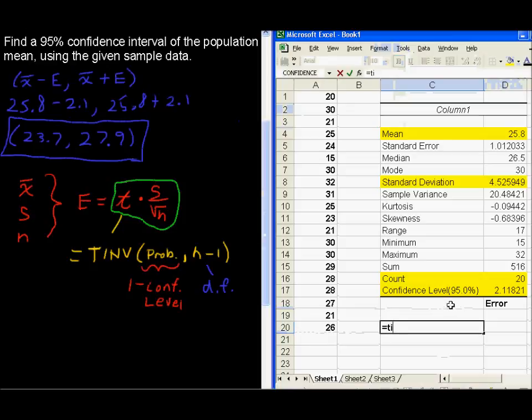Equals TINV. This is going to give us our t value. Probability is 1 minus that confidence level. Comma. Degrees of freedom. You could just type in 19 here. I know that's 20 minus 1. But I'm going to type in 20 minus 1 just to drive home the idea of what information actually goes in there. Sample size minus 1.